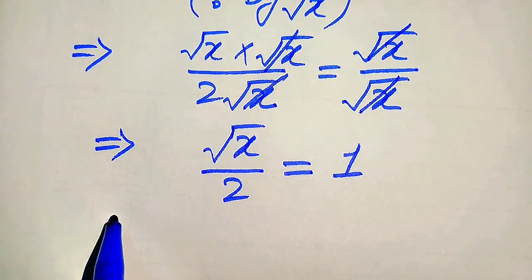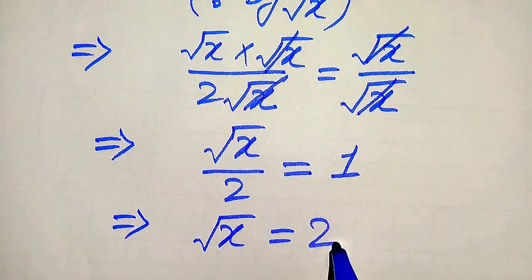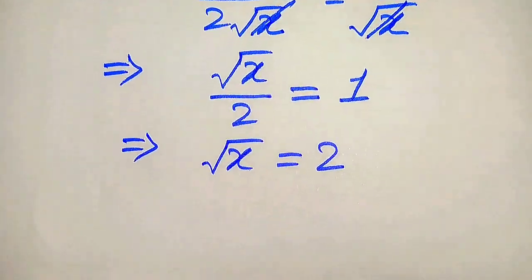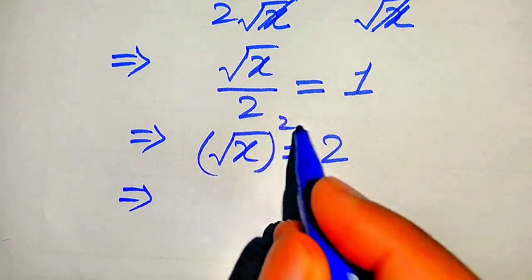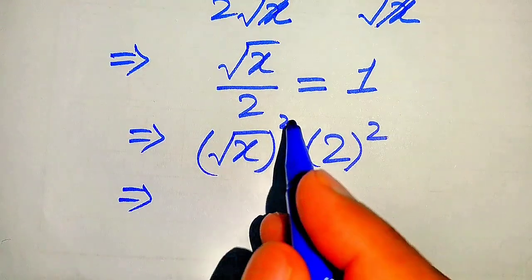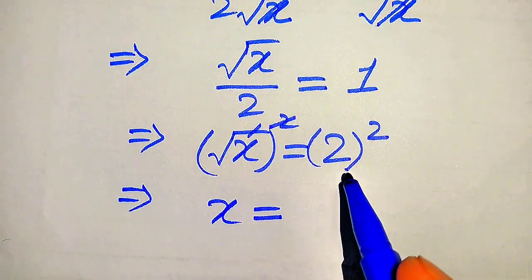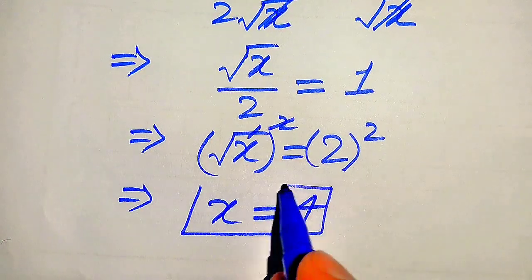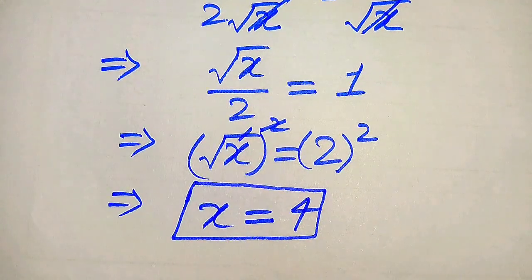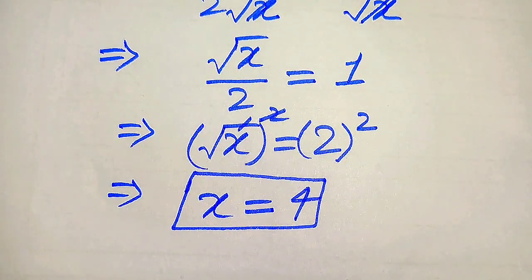We move the 2 to the right hand side, giving √x equals 2. To find x we square both sides: the square root cancels and we get x equals 2² equals 4. This is the final value of x from the second method. Thank you so much for watching this video — please subscribe to my channel for more exciting videos.